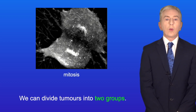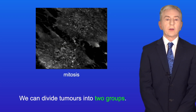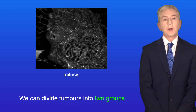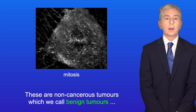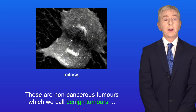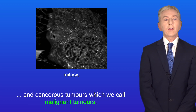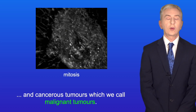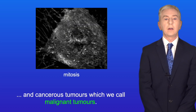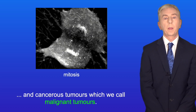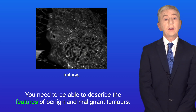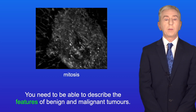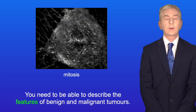We can divide tumours into two groups: non-cancerous tumours which we call benign tumours, and cancerous tumours which we call malignant tumours. You need to be able to describe the features of benign and malignant tumours.